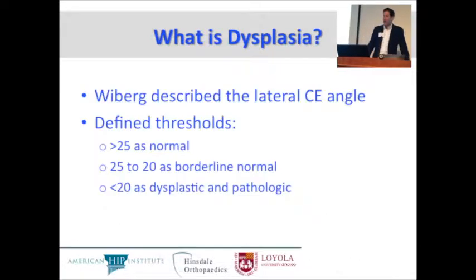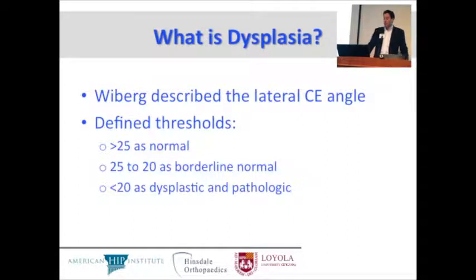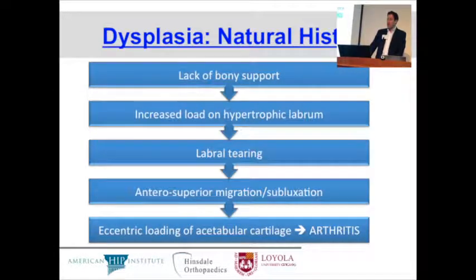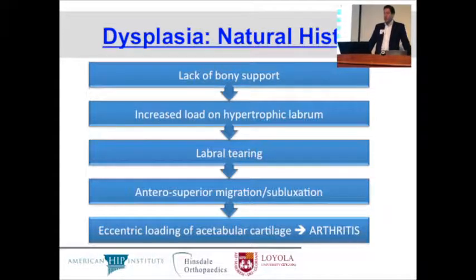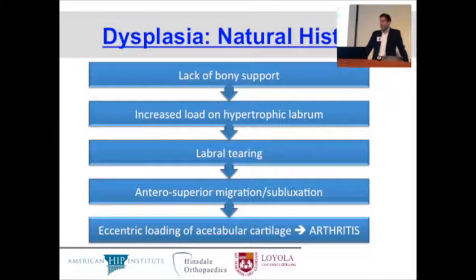Wiberg described the lateral center edge angle and defined these thresholds: more than 25 was considered normal, 20 to 25 was borderline normal, and less than 20 was dysplastic or pathologic. The natural history is a bad one. It starts with the lack of bony support and progresses to increased load on a hypertrophic labrum, labral tearing, anterior superior migration or subluxation, and ultimately eccentric loading of the acetabular cartilage, which leads to early onset of arthritis.